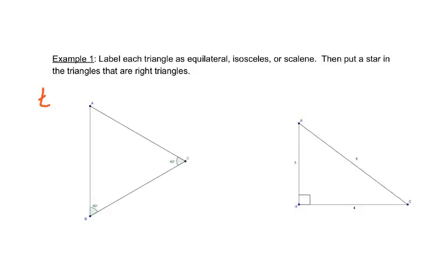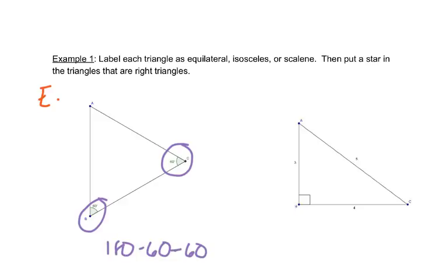Part E here has an angle measurement of 60 degrees and an angle measurement of 60 degrees. If I take 180 minus 60 minus 60, I get 60. So that means this angle here is also 60. Now if all three angles are the same, it means all three sides are the same length and we have an equilateral triangle.